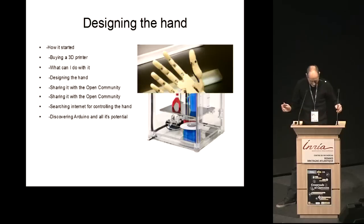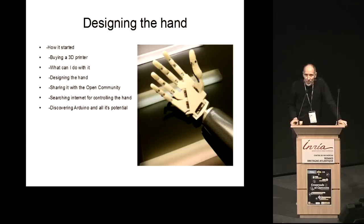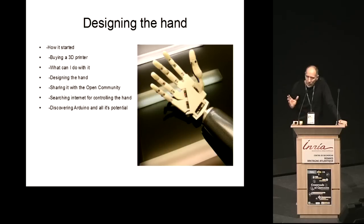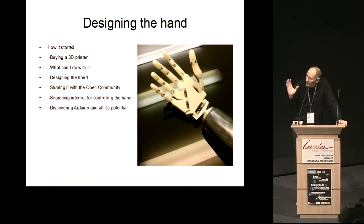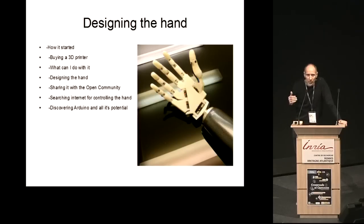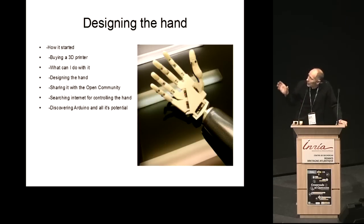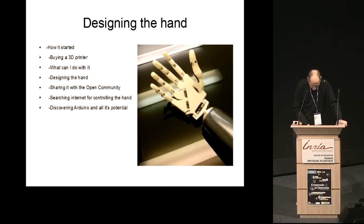When I got a request to create a prosthetic hand for a big French brand, I thought okay, I'm gonna use my 3D printer. I started to think of how I was going to assemble the parts and design the thing, but the job didn't work out. Since I had my 3D printer, I thought I'd do it for myself, so I designed the hand, put the parts together, and printed it.